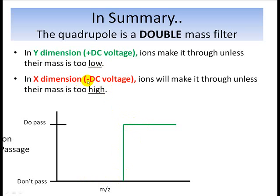You know, you have the second dimension. And in the x dimension, which carries on the rods the negative DC voltage, ions traveling down through the quadrupole will make it through unless their mass is too high, as we described. So the filtering function for that x dimension would look like this. Ions make it through up to a certain critical point in mass charge ratio. Anything above that, ions do not make it through.